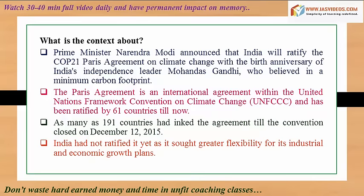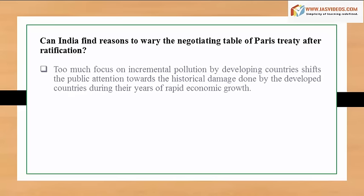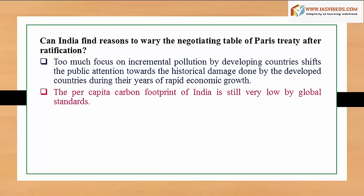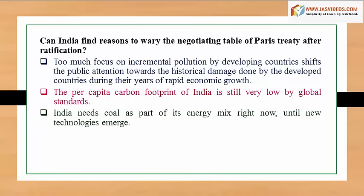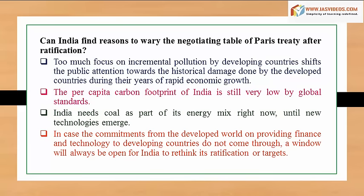India had not ratified the agreement yet as it sought greater flexibility for its industrial and economic growth plans. Can India find reasons to vary its position at the negotiating table after ratification? Too much focus on incremental pollution by developing countries diverts public attention from the historical damage done by developed countries during their rapid economic growth. India's per capita carbon footprint is still very low by global standards, and India needs coal as part of its energy mix until new technologies emerge. If commitments from developed nations on finance and technology do not come through, a window will remain open for India to rethink its ratification or targets.